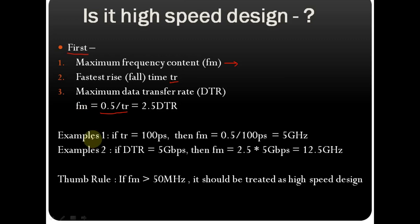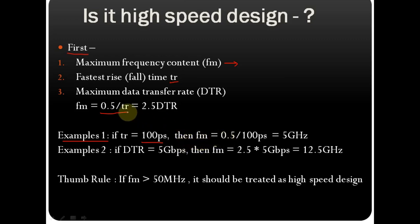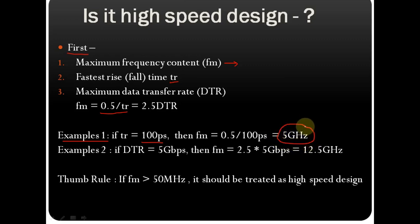Let us understand this with an example. If the rise time of your digital signal is 100 picoseconds, you can find the maximum frequency using: fm = 0.5 / 100 ps. Calculating this gives 5 gigahertz.